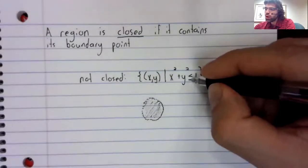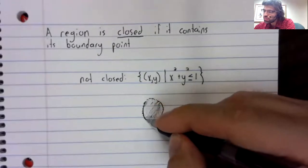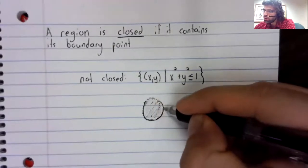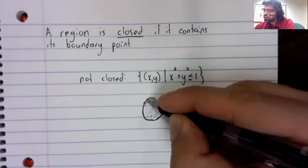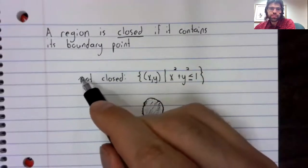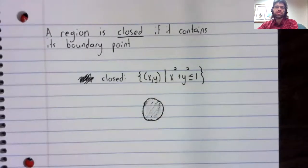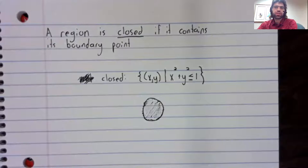If we made this inequality strict, now we're including the boundary, and this set is closed.